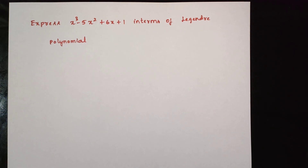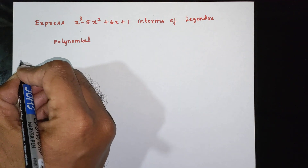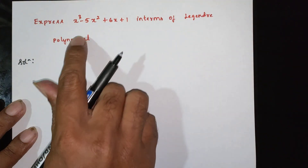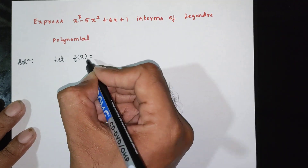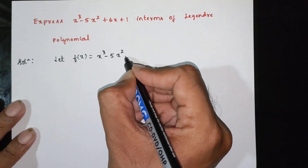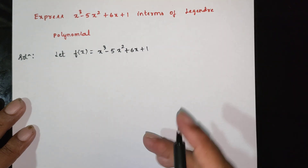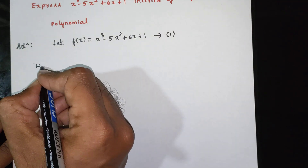Next question: express f(x) = x cube minus 5x squared plus 6x plus 1 in terms of Legendre polynomials. Let f of x be equal to x cube minus 5x squared plus 6x plus 1. This is equation 1.